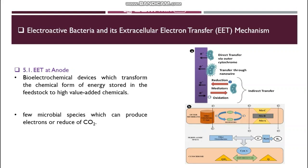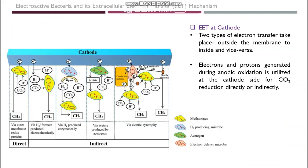Microbial electrolysis cells are bioelectrochemical devices which transform chemical energy stored in the feedstock to high value-added chemicals such as hydrogen, methane, acetate, and many more. This biological conversion takes place using the metabolic activity of electroactive bacteria, which can produce electrons or reduce carbon dioxide. Two types of electron transfer take place: outside the membrane to inside and vice versa. Electrons and protons generated during anodic oxidation are utilized at the cathode for carbon dioxide reduction directly or indirectly. Direct electromethanogenesis in the bio-cathode is carried out through redox external membrane proteins in the form of cytochromes in contact with the cathode, along with outer membrane proteins like ferredoxin, rubredoxin, hydrogenase, and/or formate dehydrogenase.